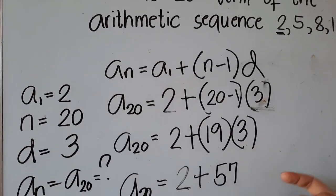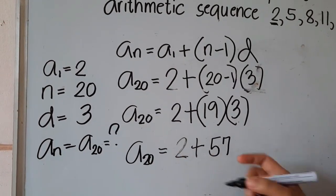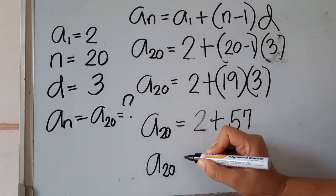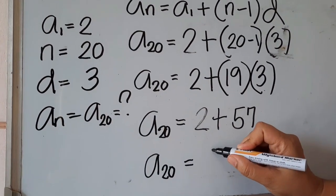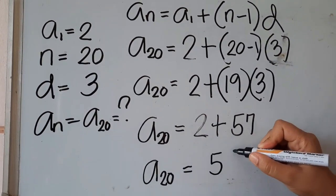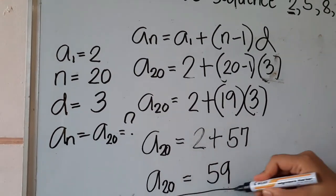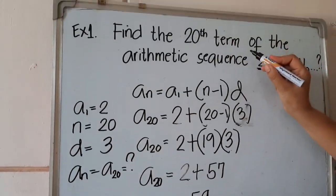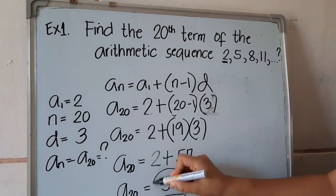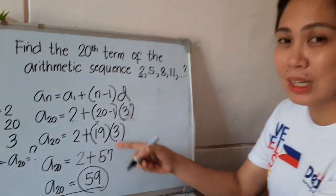Since we now only have 2 plus 57, we can get our a_20. Our a_20 equals 59. Therefore, the 20th term being asked in our given problem is 59.